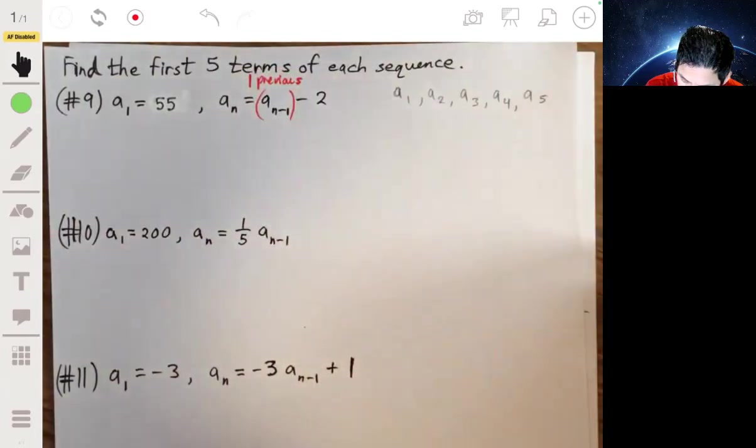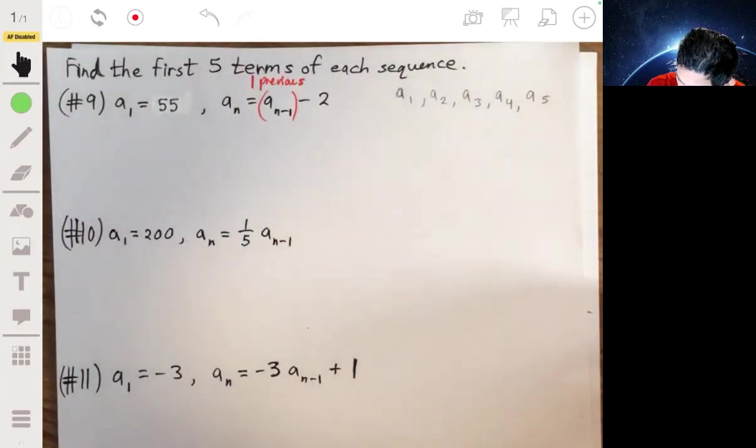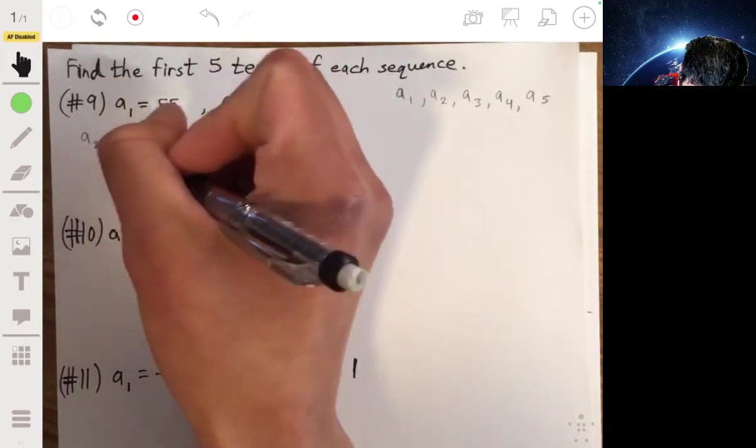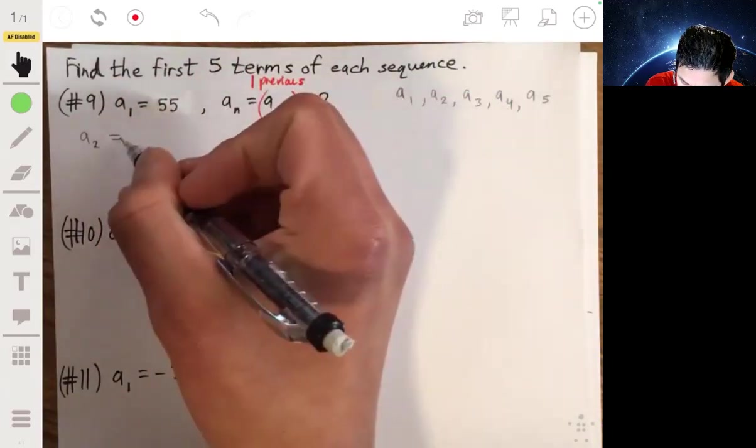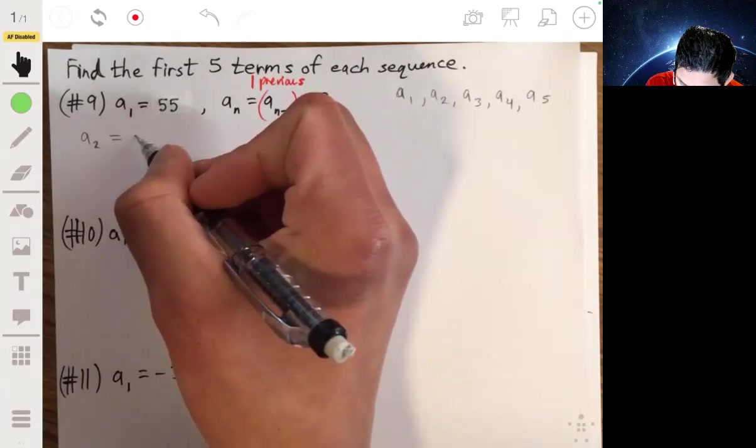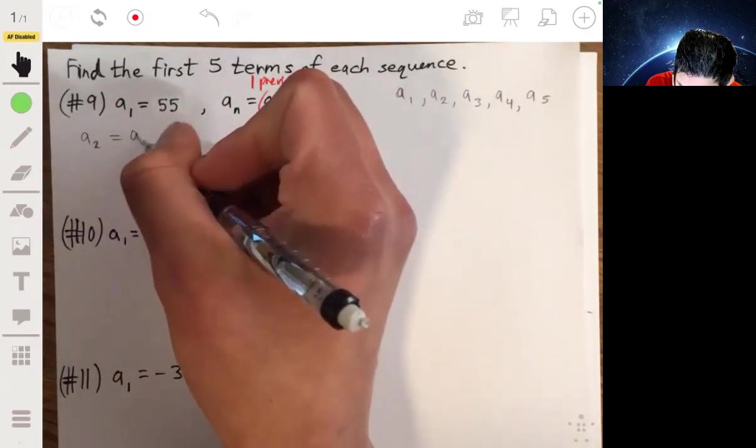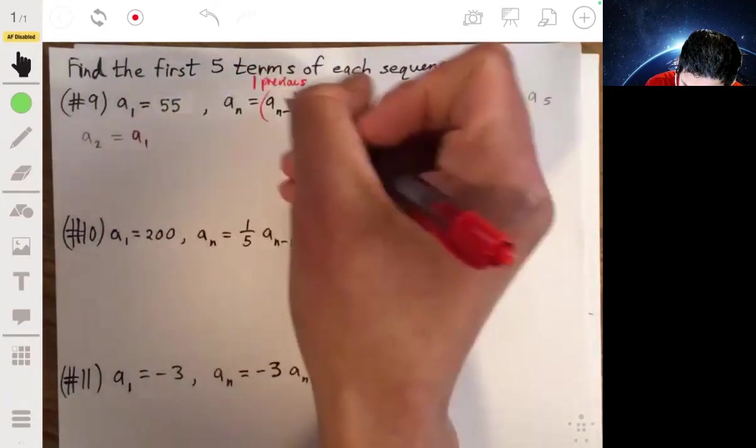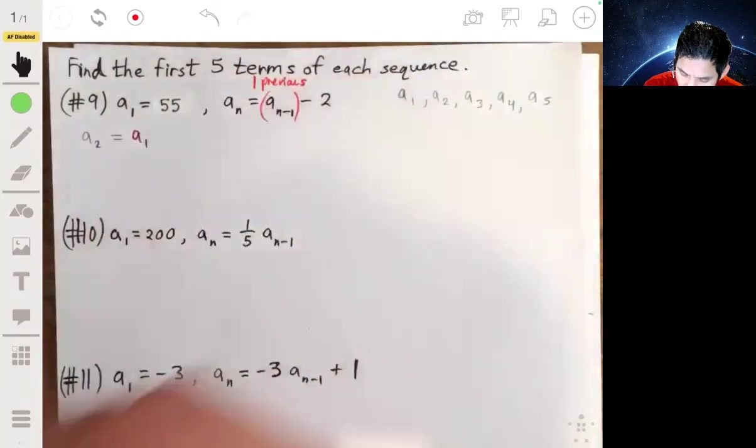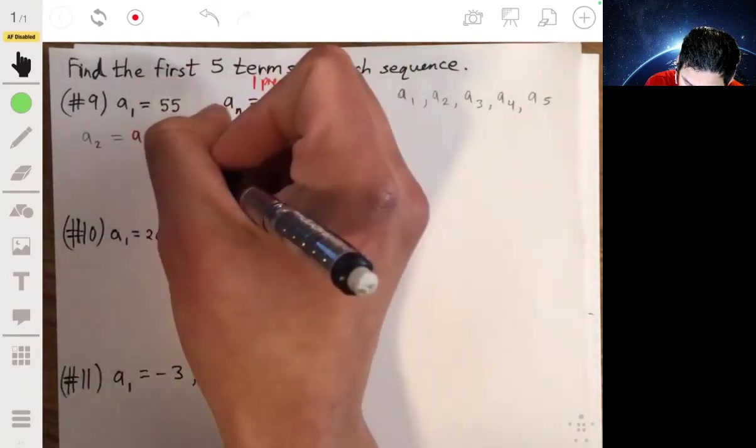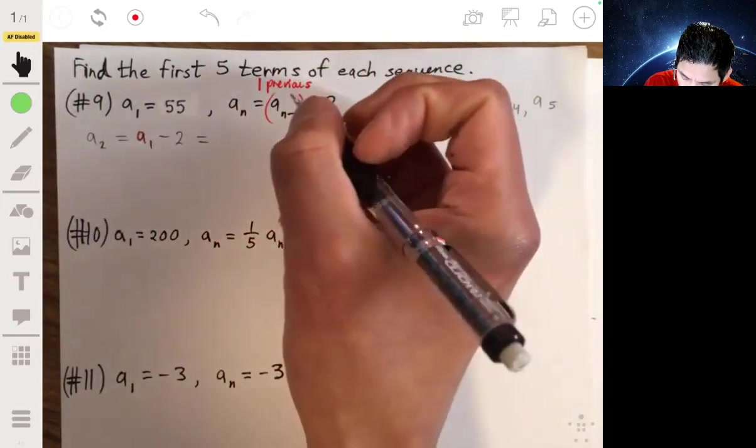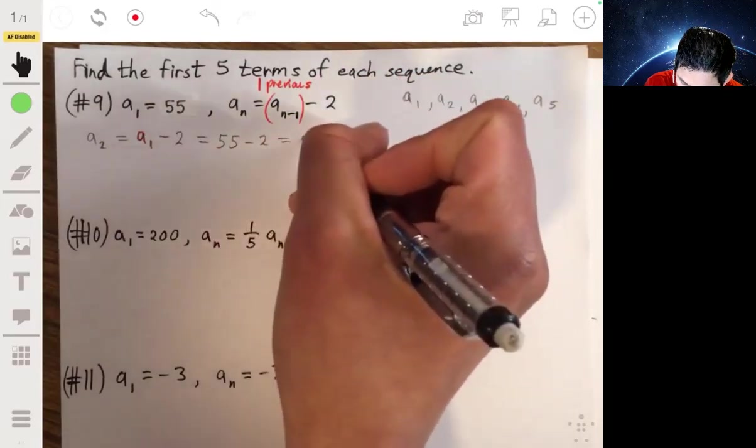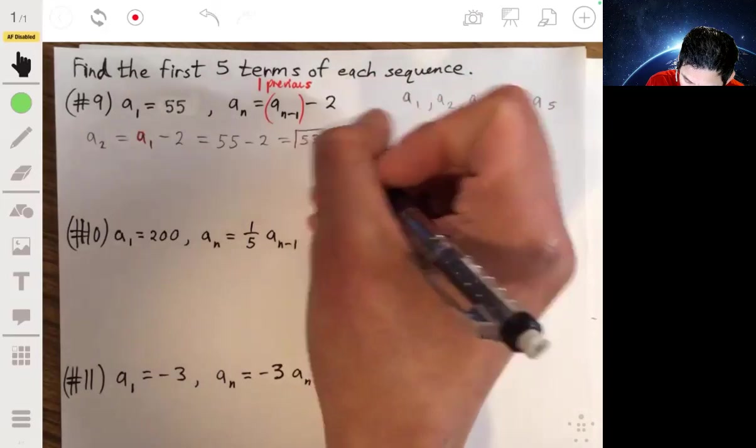So if you want to find a2, a2 would be equal to the previous term or a1. That's what that is, a1. And then from that a1 term, we subtract 2. a1 is defined to be 55, so this is just 55 minus 2, and so a2 is 53.